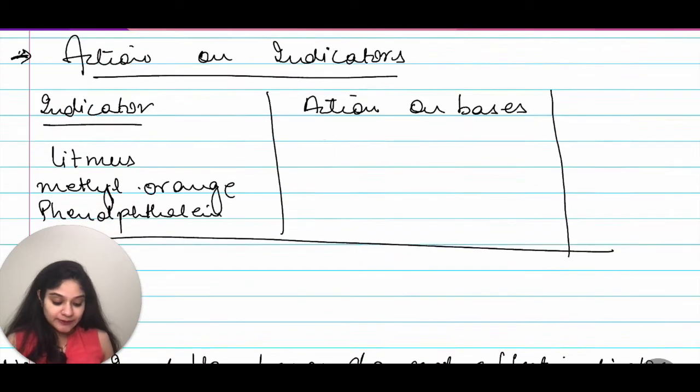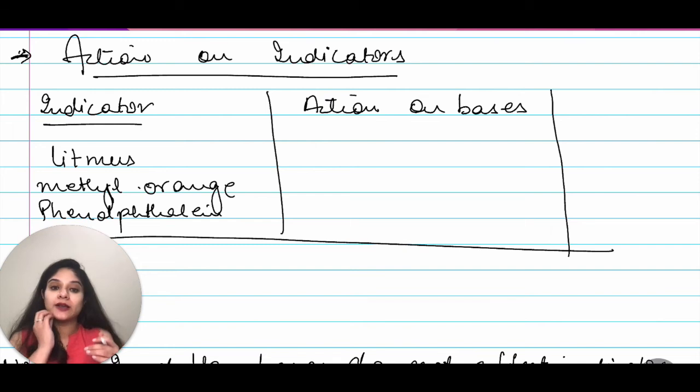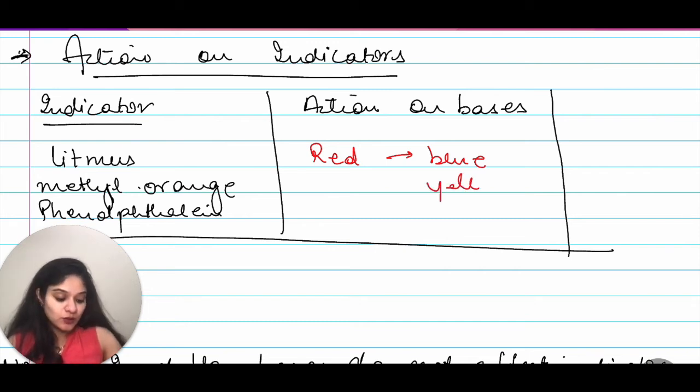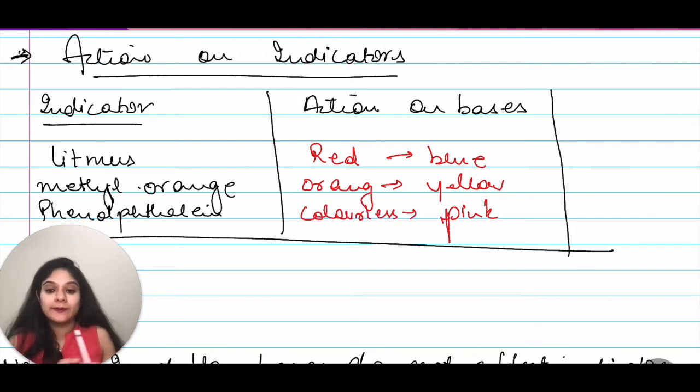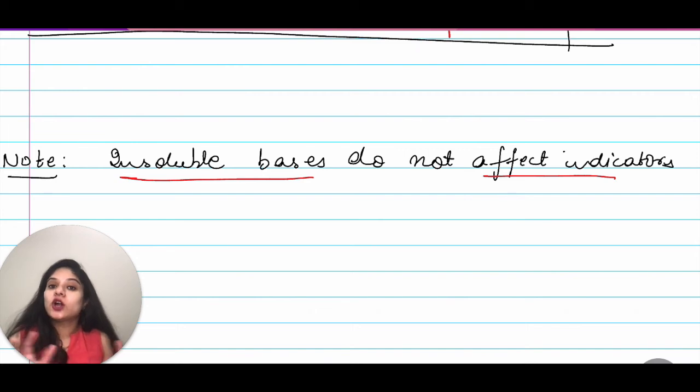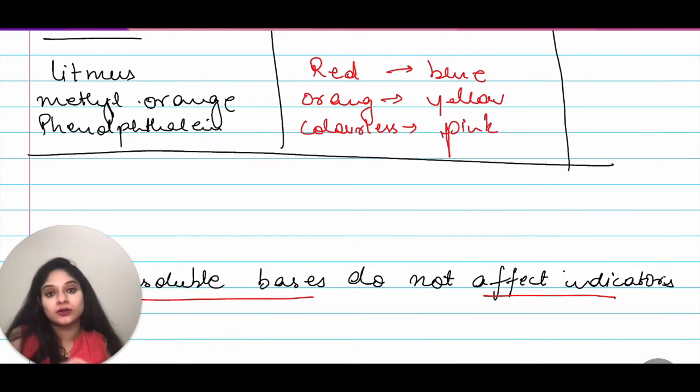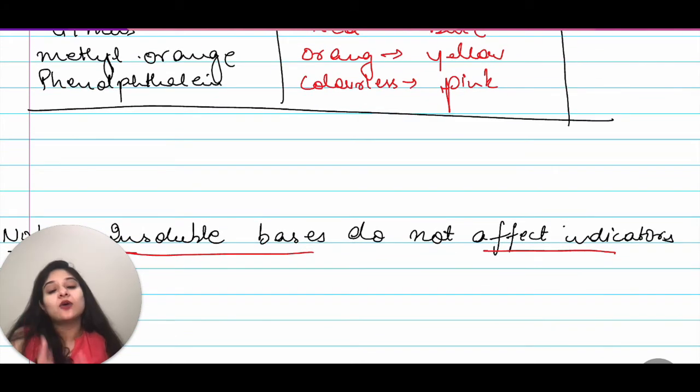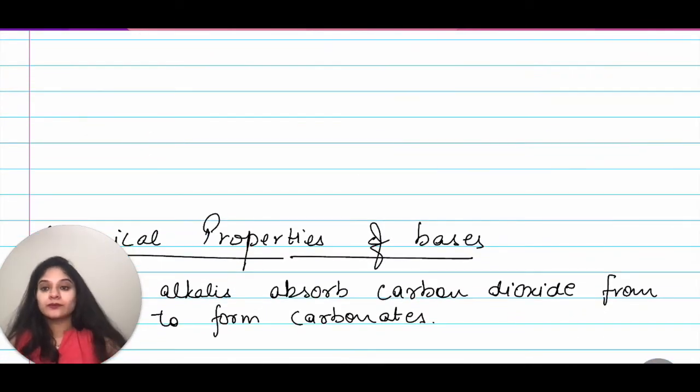Moving on to indicators. I have litmus indicator first. What is the action on bases? It will turn your red litmus to blue. Methyl orange will turn yellow from orange and phenolphthalein will turn pink from colorless. Colorless to pink. Now, one thing to note here is that insoluble bases do not affect indicators. For example, even if you think about dry HCl gas, it does not show any change on the litmus paper or any of the indicators because for your indicators to work, you need some moisture in the compound. If they are insoluble bases, then how will they affect indicators? They will not affect the indicators.